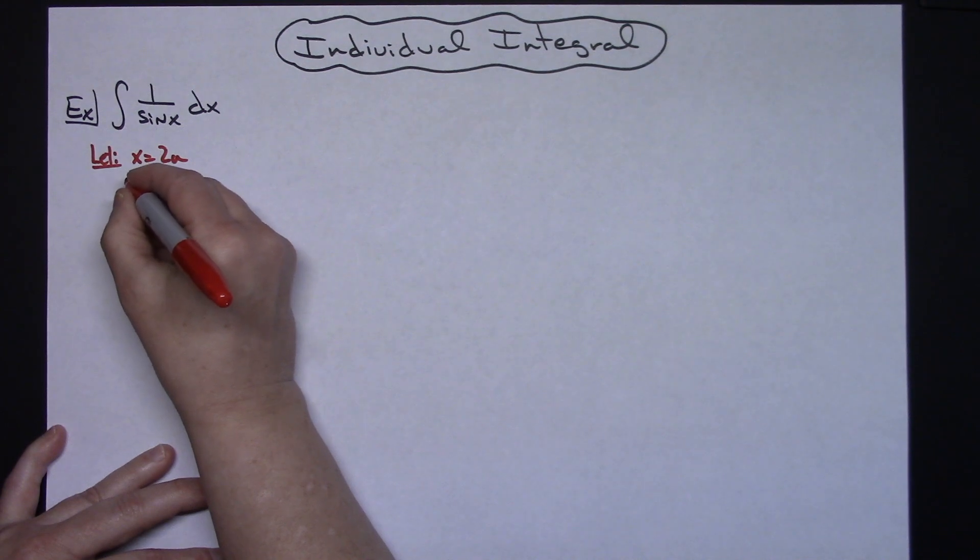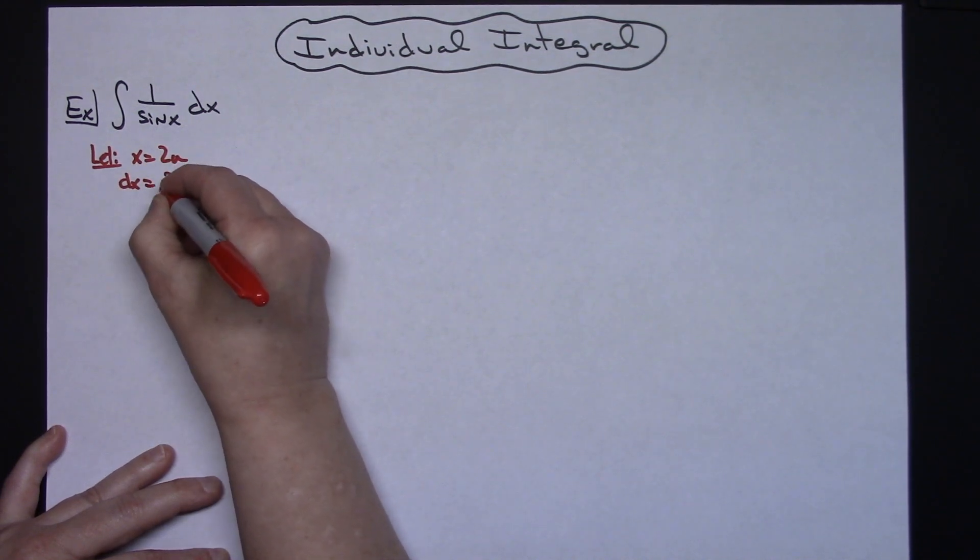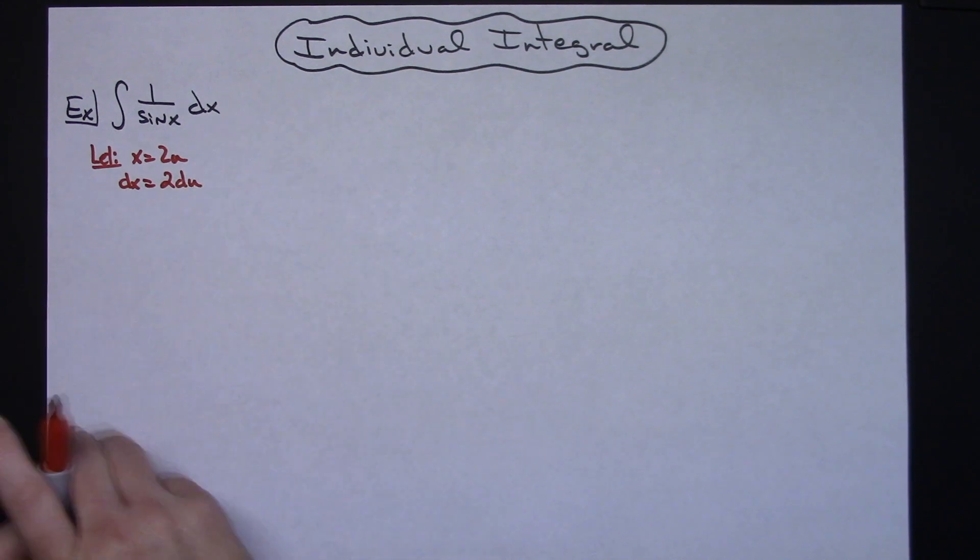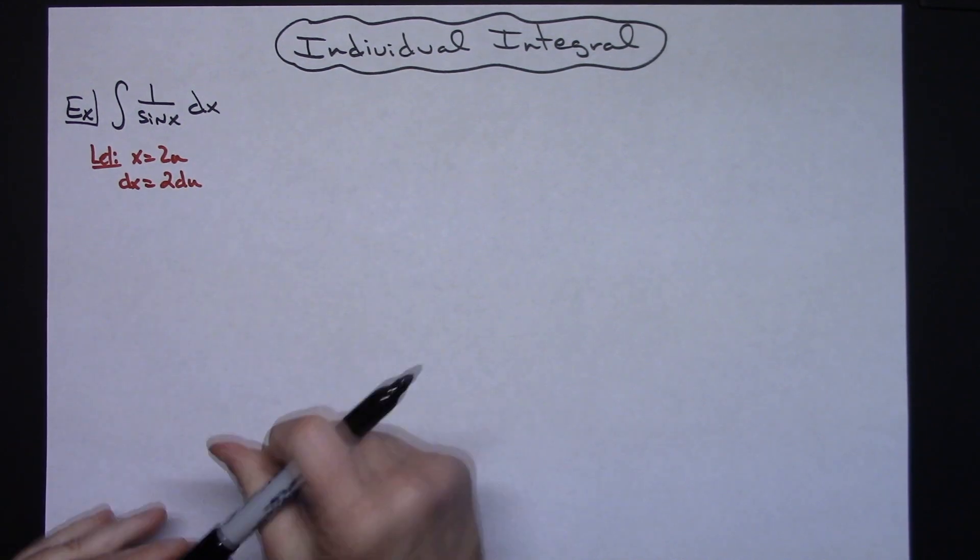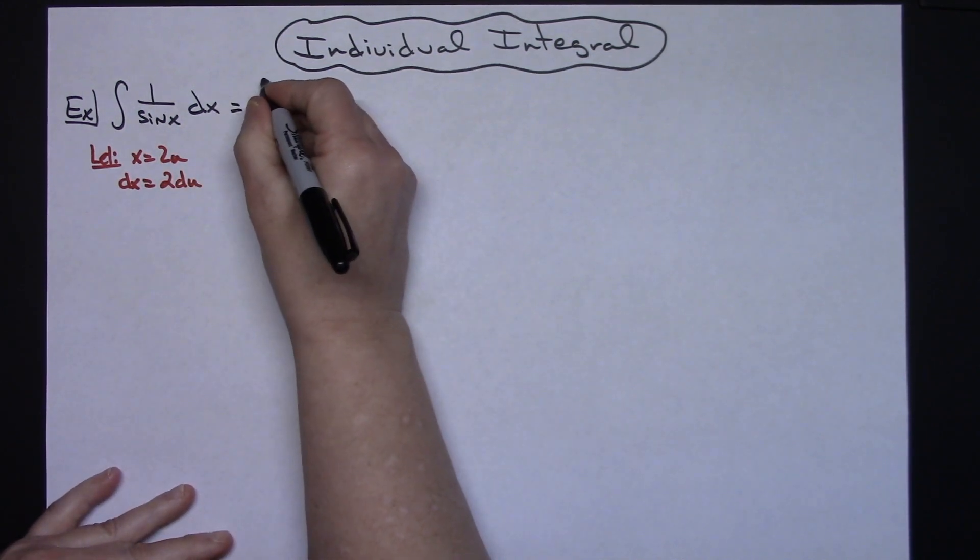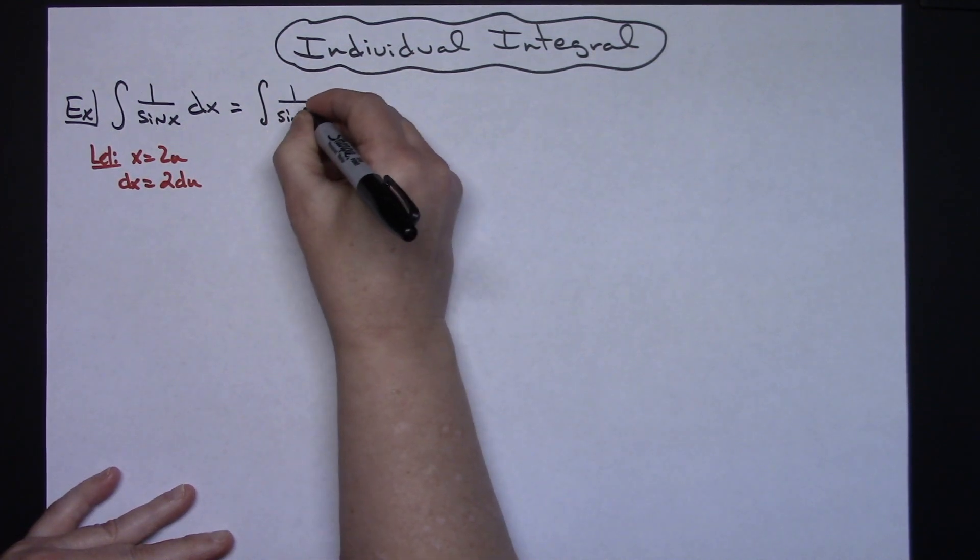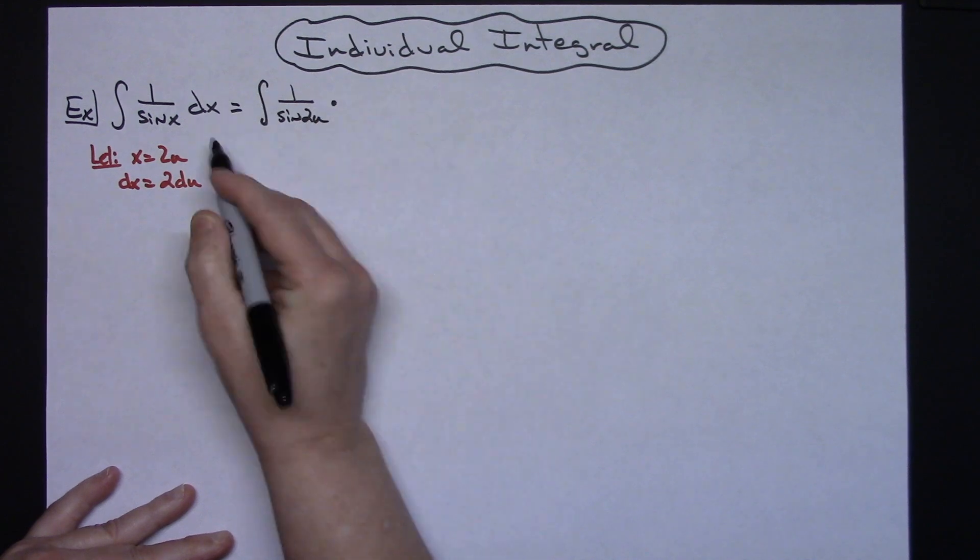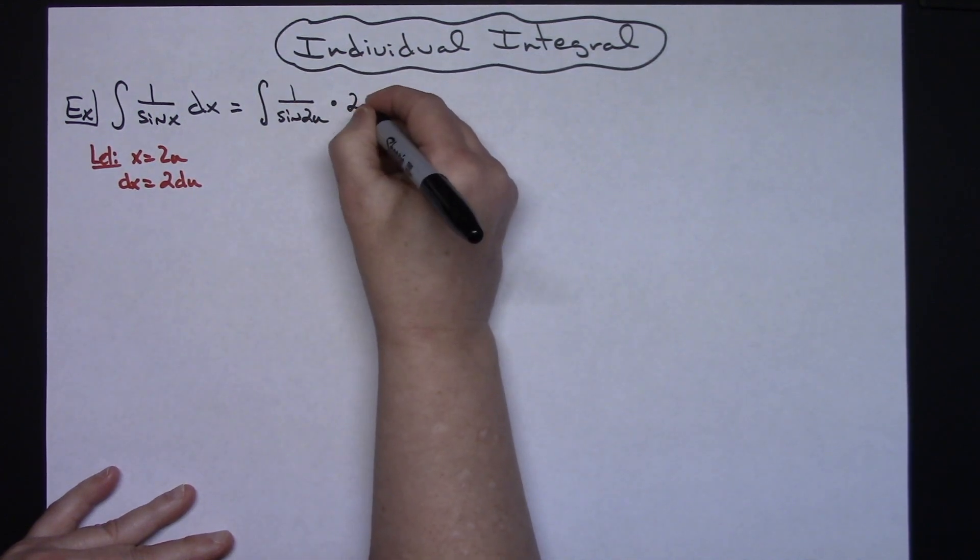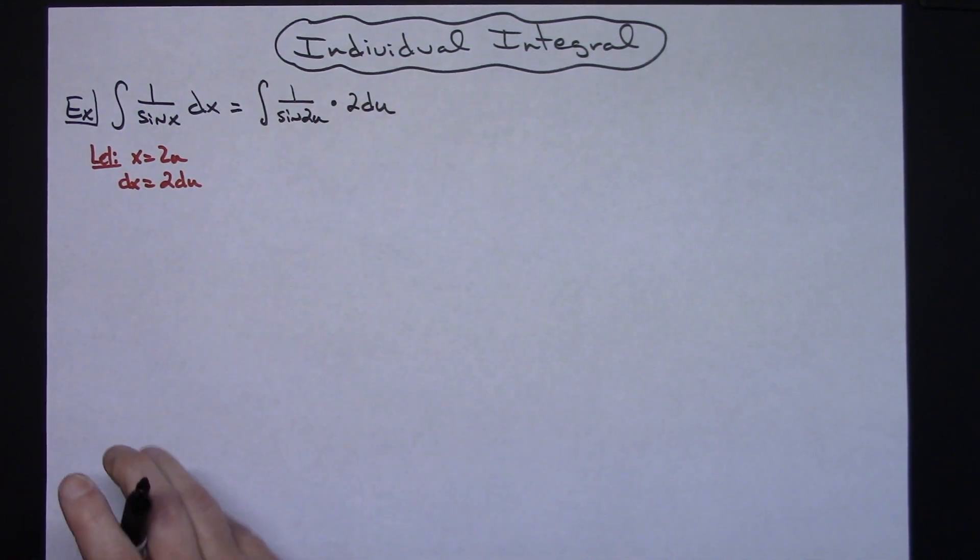Now from here let's go ahead take the derivative of both sides. I'm going to have a dx and on the other side I'll have a 2du. Now let's come back up here to our integral and do some substitutions. So I'll have the integral of 1 over the sine of 2u times, replacing dx, I'll have a 2du at that point.